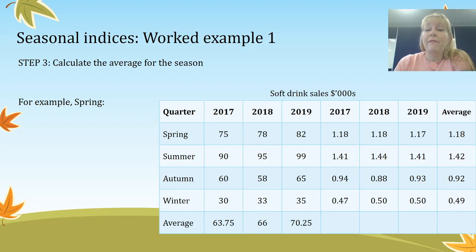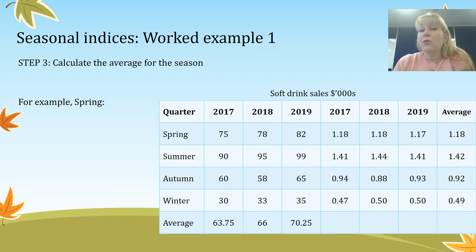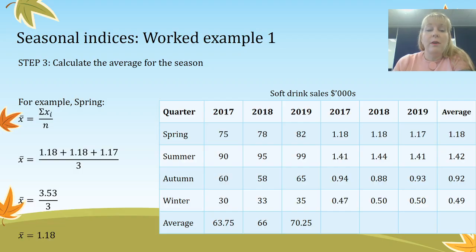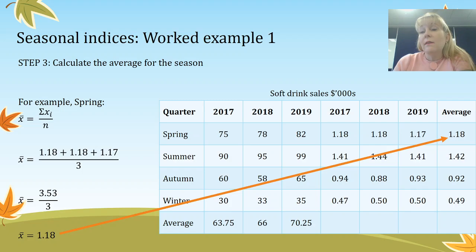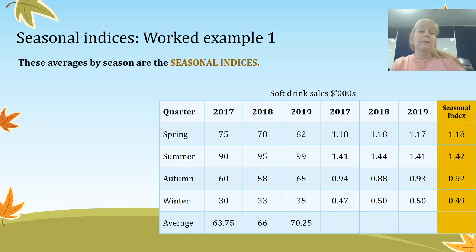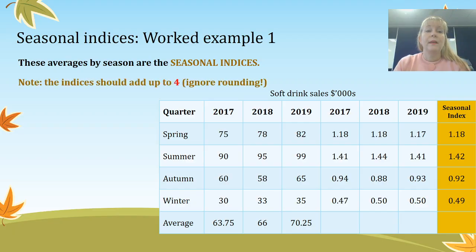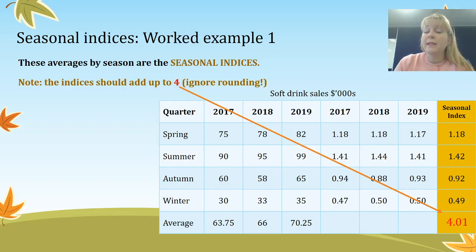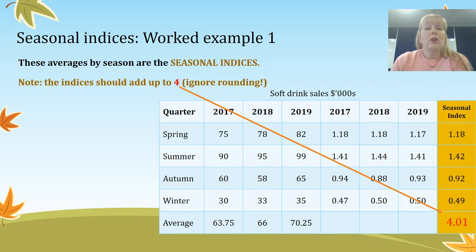Our third step is to calculate the average index for each season. We take all three spring indices and average them by dividing by three, giving a seasonal index of 1.18 for spring. These are now our seasonal indices. It's important to remember they should add up to four — in this case there's a minor rounding error giving 4.01, but it's a good idea to always check that your four indices add up to very close to four, because if they don't, you know you've done something wrong.